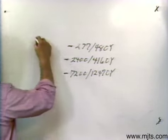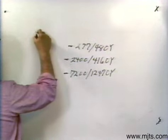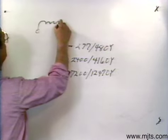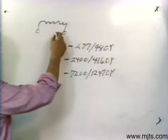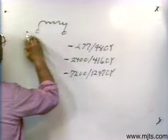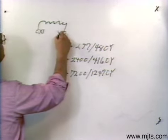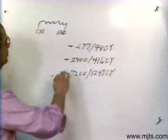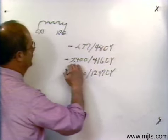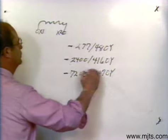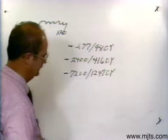The way this transformer would look on the low side: it would have two bushings. Depending on whether it's additive or subtractive, you'd have X1 and X2 — just two bushings. As I said, these are more apt to be in a substation setting.